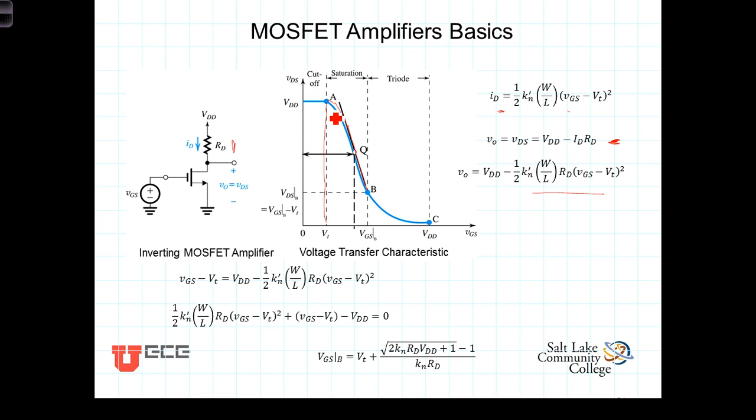For values of VGS less than the threshold voltage, the transistor is in the cutoff region. And for values of VGS corresponding to this point B, where VDS is less than VGS minus VT, the transistor is in the triode region.